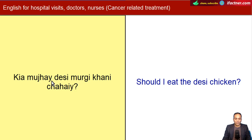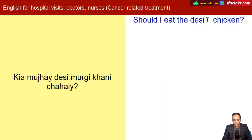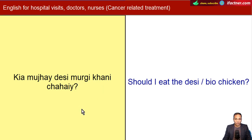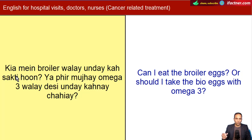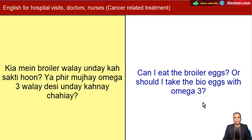Kya mujhay desi murgi khani chahiye? Should I eat the desi chicken? Should I eat the bio chicken - yaani biological tarike se barha hua. Doosre jo chickens hote hain woh hote hain broiler, jo ki khaas taur peh gosht ke liye badhaye jaate hain. Kya mein broiler wale ande kha sakti hoon? Ya phir mujhay omega-3 wale desi ande khane chahiyen? Can I eat the broiler eggs? Or should I take the bio eggs with omega-3?